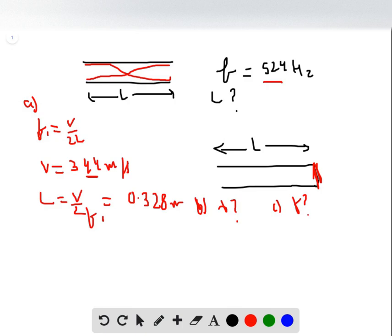For part B, the wave becomes like this. We have λ₁/4 = L because the wavelength becomes four times the length. The length we already found is 0.328 meters, so lambda becomes 1.31 meters.